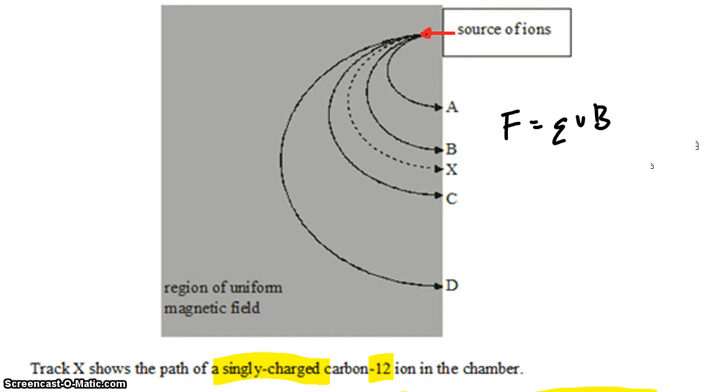If they're moving at the same speed, then V is the same. If they're both singly charged, then Q is the same. And if they're both moving through the same magnetic field, then B is the same, which means that they both experience the same force.